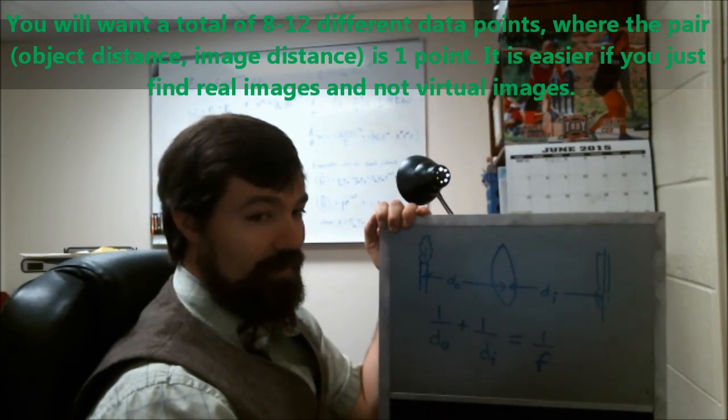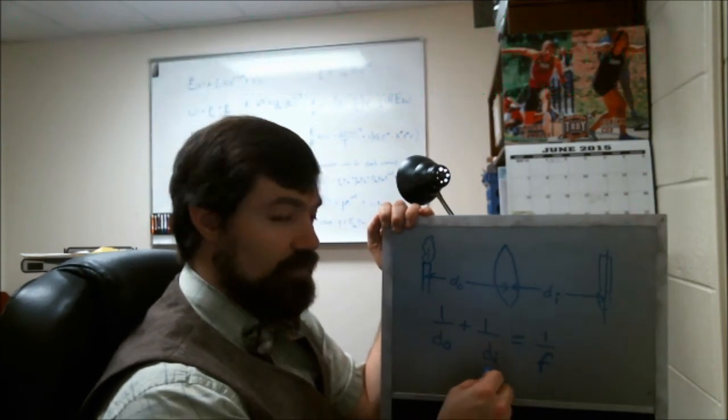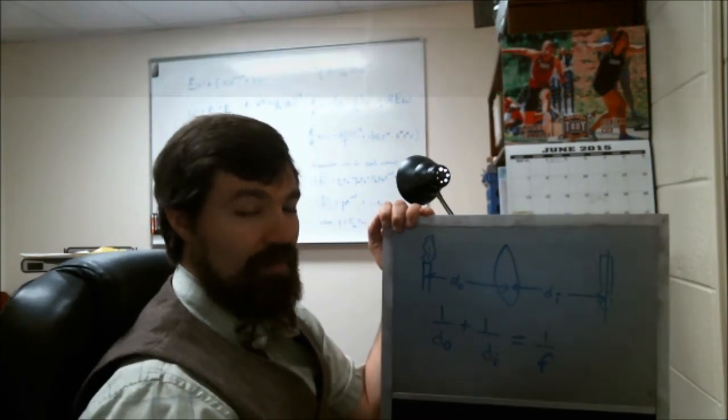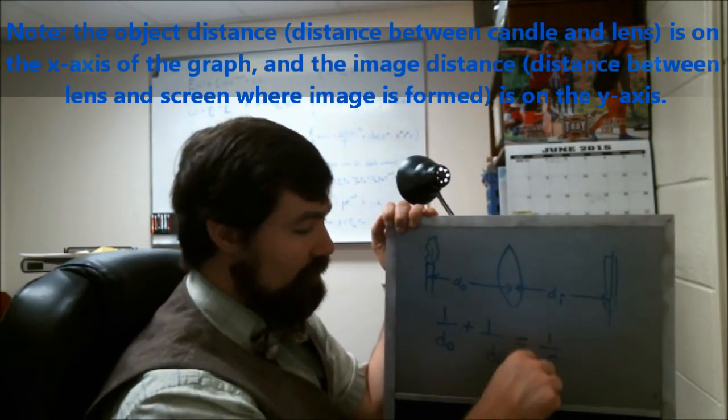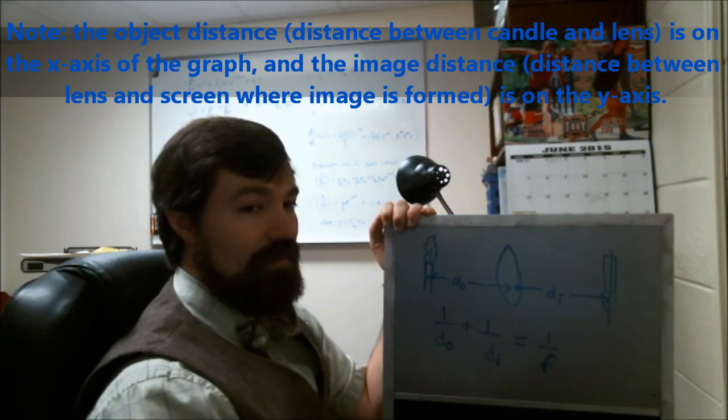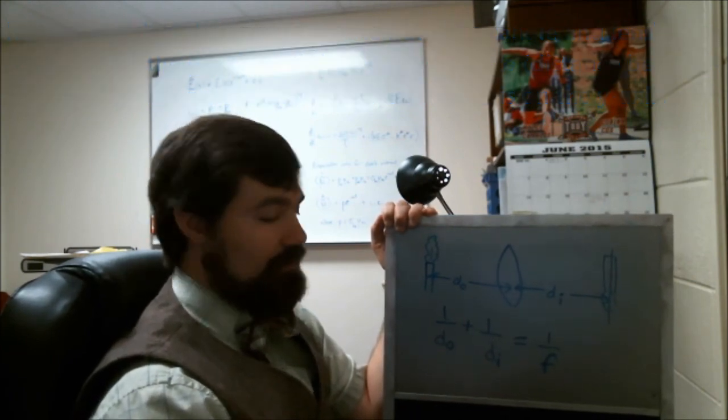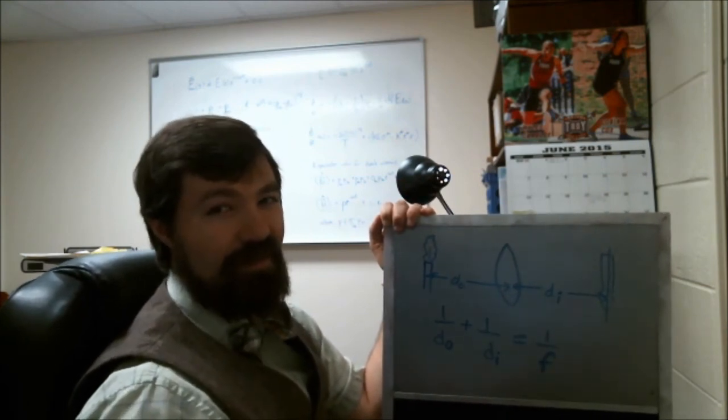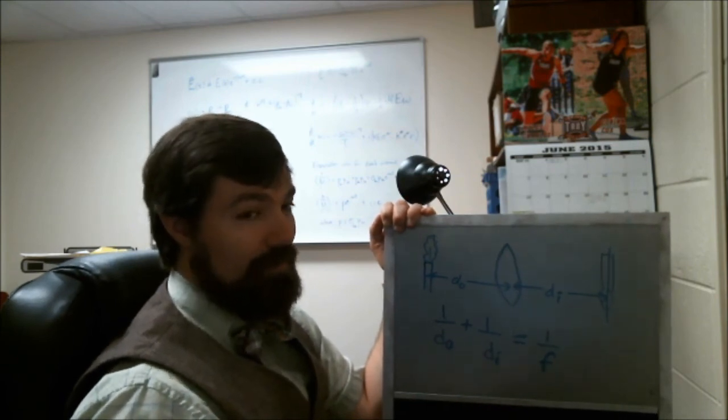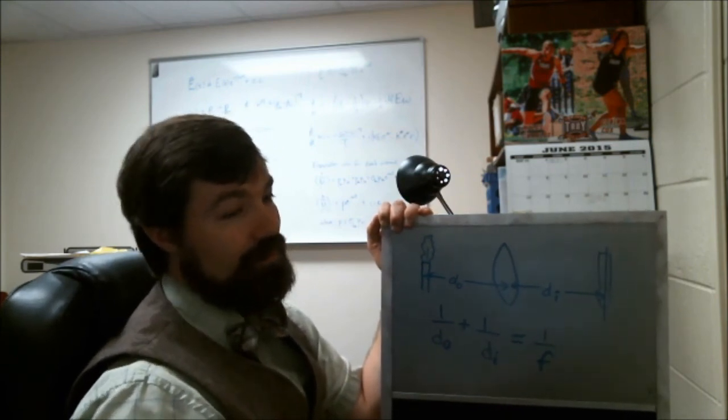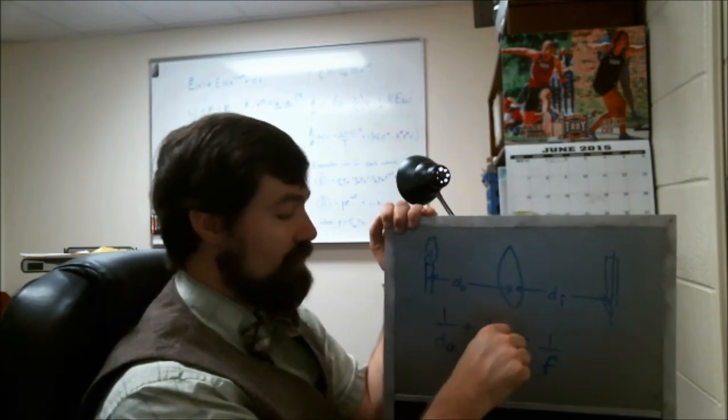And then you're going to make a graph in which you graph 1 over DO versus 1 over DI. And from that graph you should be able to figure out what the focal length is. Usually if you're trying to figure out what a third parameter is from a graph it's either going to end up being a slope or an intercept of the graph that you've made. Or some other parameter in the graph if it's not linear. This graph really should be linear as long as you're graphing 1 over DO plus 1 over DI.